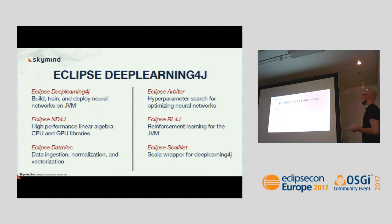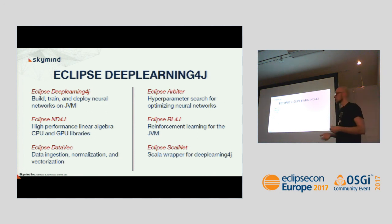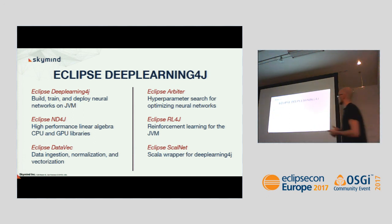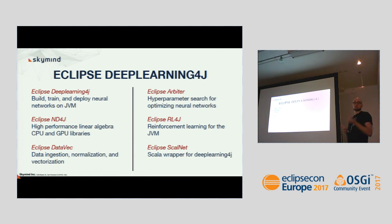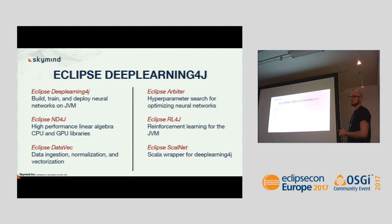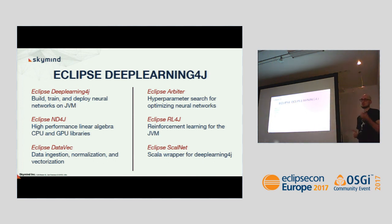Another tool is DataVec — a general-purpose ETL tool that connects with all the other components, handy for building full end-to-end applications with or without deep learning. We also have Arbiter, which does hyperparameter optimization to tune your network. There's a reinforcement learning project as well. And a project called ScalNet — a Scala wrapper for Deep Learning 4J that is idiomatically close to other frameworks like Keras for Python.